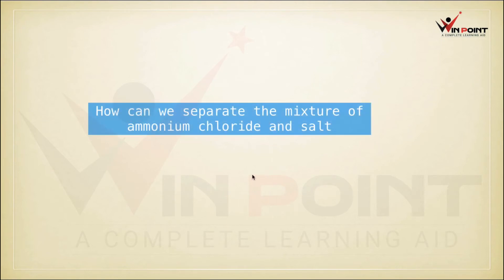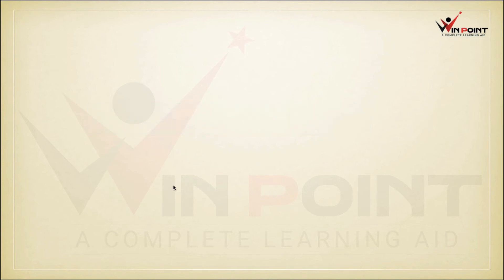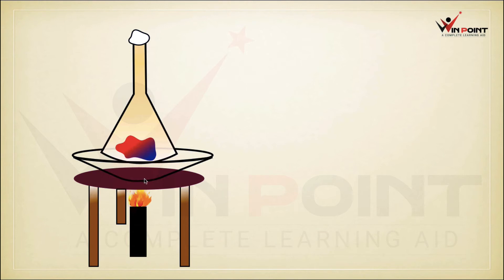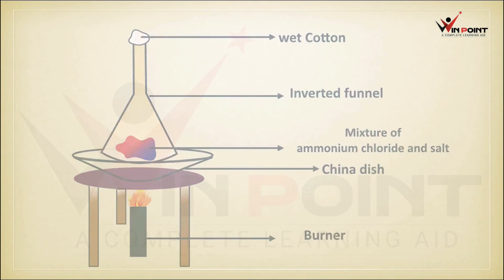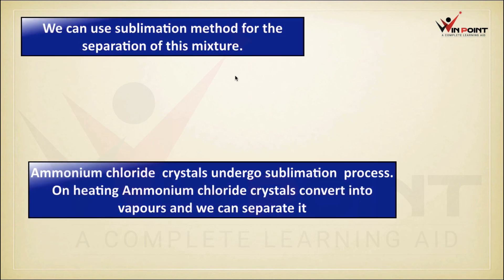How can we separate the mixture of ammonium chloride and salt? Ammonium chloride has a special property — it is a sublimable substance and will undergo sublimation. Sublimation is the process of conversion of a solid directly into gas. We take the mixture in a china dish with an inverted funnel on top. When we heat this mixture, the ammonium chloride converts into vapor and deposits on the sides of the inverted funnel, separating it from the salt.